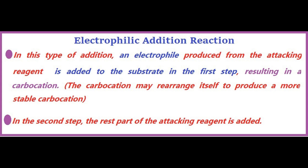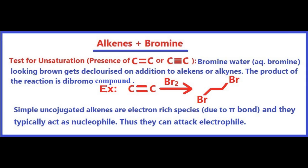Let us first discuss about electrophilic addition reaction. In this type of reaction, an electrophile produced from the attacking reagent gets added to the substrate first, and thus a carbocation is formed. Sometimes the carbocation first formed may undergo rearrangement to form a more stable carbocation. In the next step, the nucleophilic part of the attacking reagent gets added. As an example, we have bromination of alkenes.